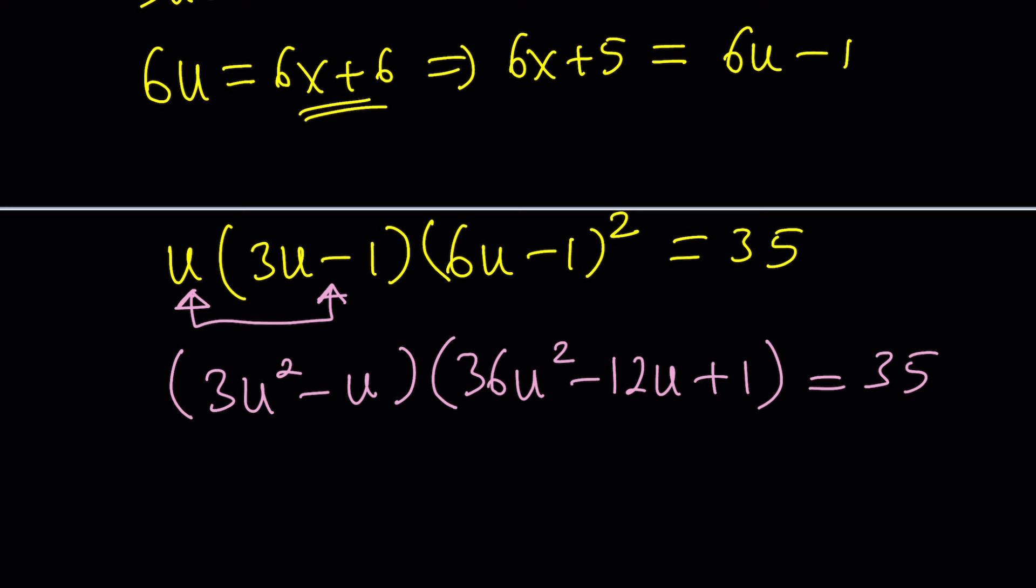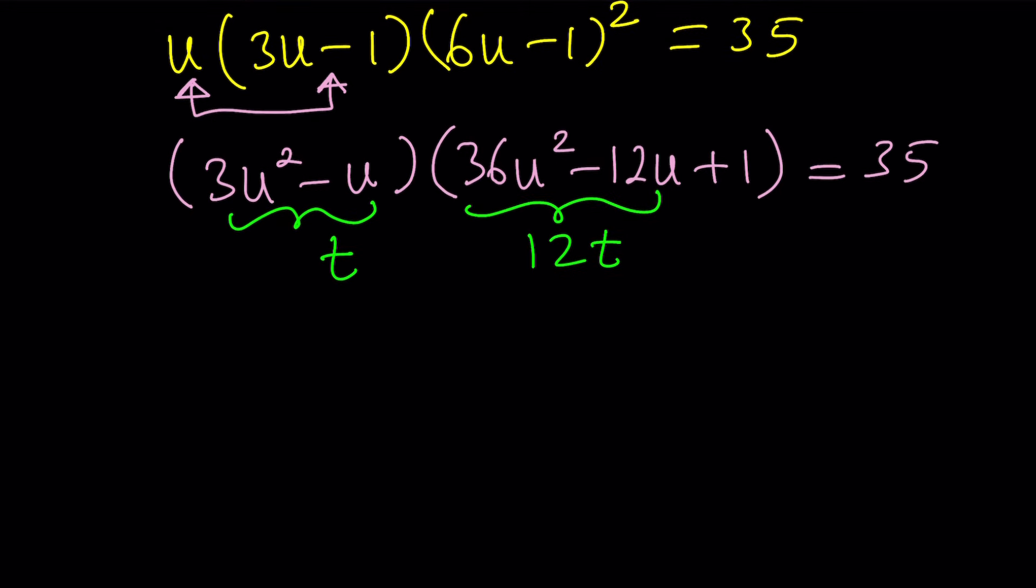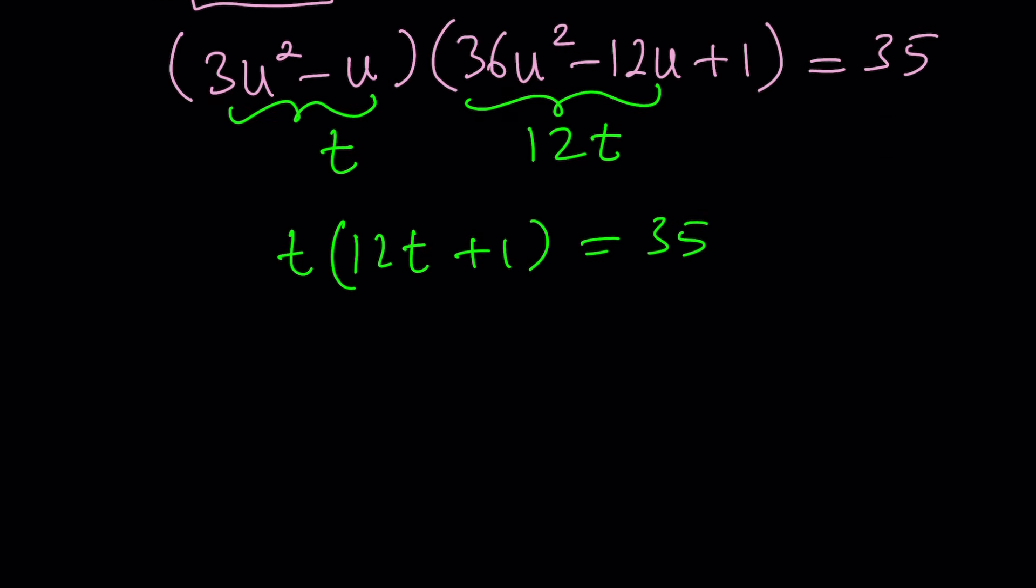Now, I'm going to go ahead and call this t. And this will be 12t. Do you see that? Because if you multiply 3 times 12, you get 36. Notice that. If you multiply 3 by 12, you get 36. If you multiply 1u by 12, you get 12u. Of course, the signs are preserved, so we're good. Awesome. Now, this turns our equation into a quadratic at the end, right? Which is awesome. Let's go ahead and simplify this. We're going to get 12t² + t = 35 or minus 35 equals 0.